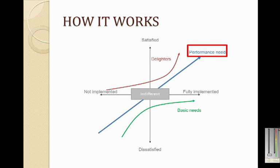The blue line represents the performance needs of a product. The more you add these features, the more satisfied the user feels about the end product. The less these features are included, the less satisfied the user feels about the product.